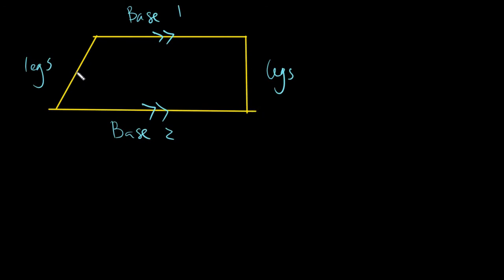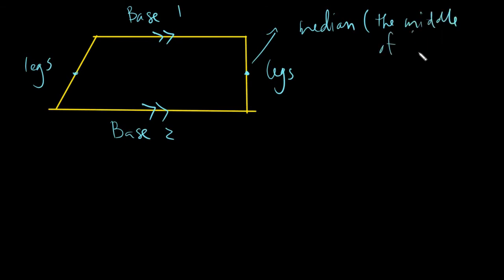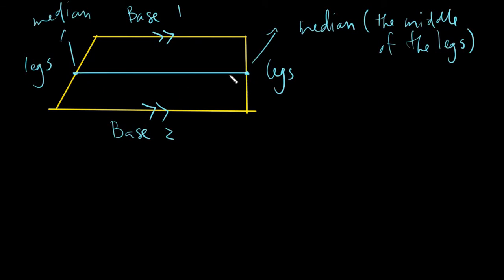The next one, we will have our median. The median is just simply the middle point of your legs. And then we have our midline. The midline is just simply the distance between the midpoints of the legs. By definition, this midline would always be parallel to the bases.